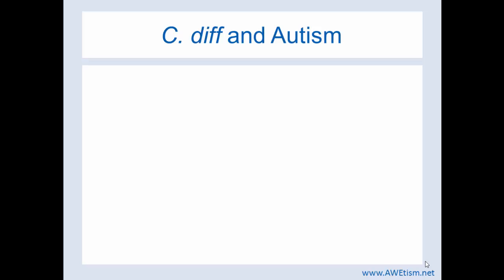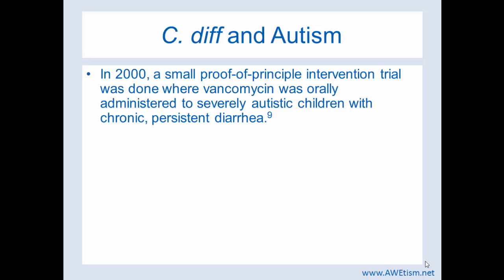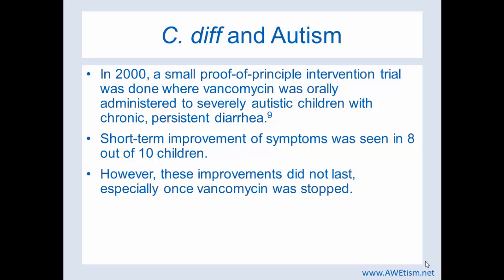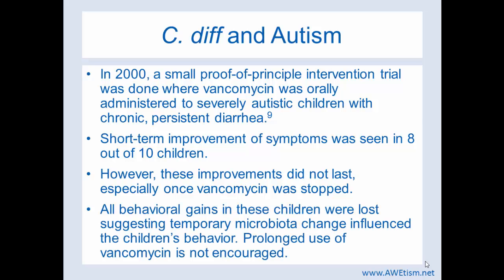Autism is probably why you're listening to this video. In 2000, a small proof-of-principle intervention trial was done where vancomycin was orally administered to severely autistic children with chronic persistent diarrhea. This is where the idea of giving an antibiotic to a child with autism to see improvement comes from. There were only 10 children in the trial, and short-term improvement of symptoms was seen in 8 out of the 10. However, these improvements did not last once vancomycin was stopped — all behavioral gains were lost — suggesting that a temporary microbiota change influenced these children's behavior. Prolonged use of vancomycin is not encouraged.